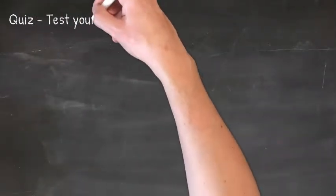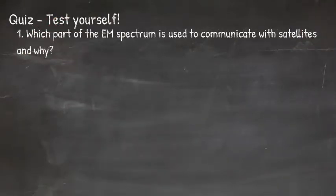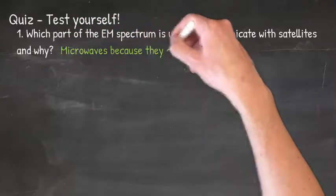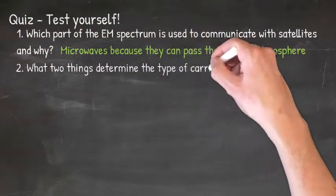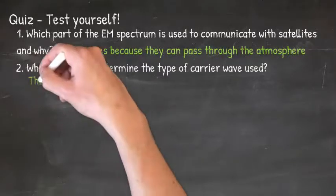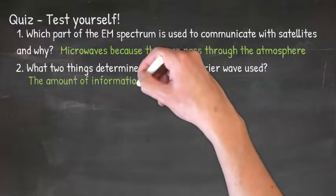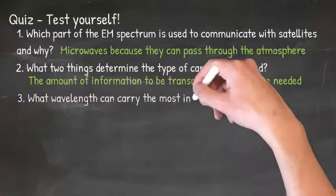Right, time for a quiz. Which part of the electromagnetic spectrum is used to communicate with satellites, and why? What two things determine the type of carrier wave used?